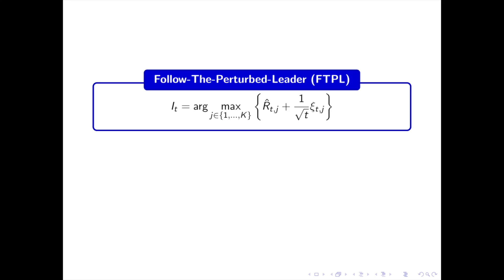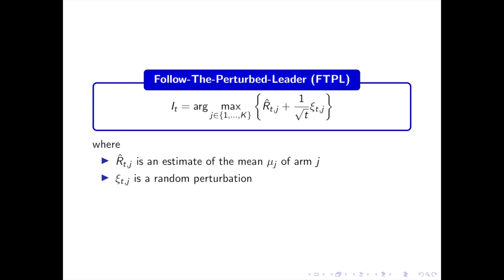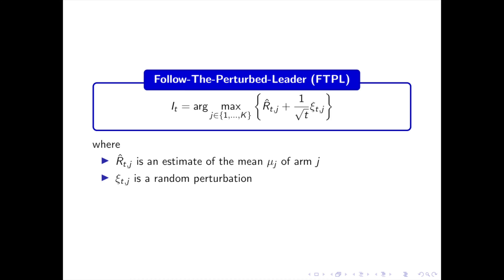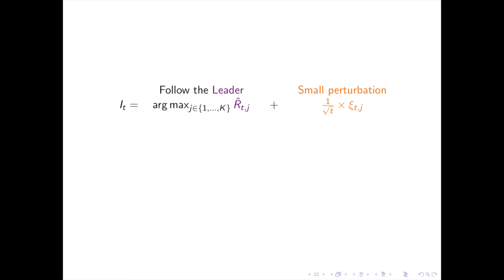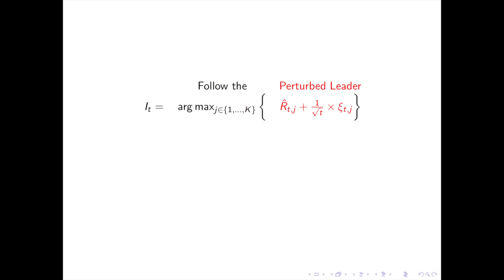At every time step t, we select the arm j which has the largest reward estimate r̂_{t,j} plus a small random perturbation ξ_{t,j} scaled by √t. Here, r̂_{t,j} is an estimator of µ_j, the expectation of arm j. At each time step t, the arm j with the largest estimate r̂_{t,j} is called the leader, and the strategy which selects the leader is called Follow the Leader. However, Follow the Leader does not satisfy the exploration-exploitation dilemma because it purely exploits without exploring, and its regret can be very large. Therefore, we add an exploration component by adding a small perturbation ξ_{t,j} — and we now follow the perturbed leader.